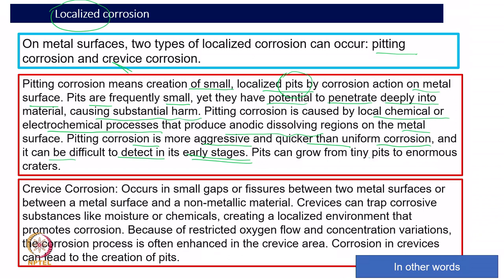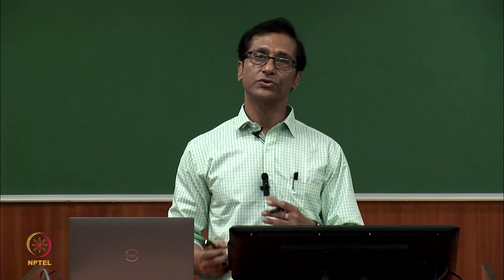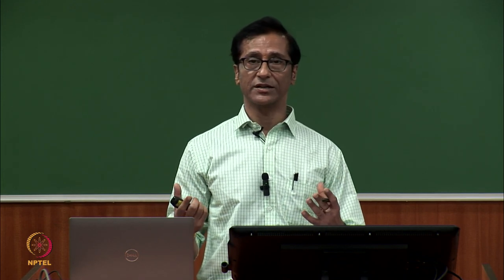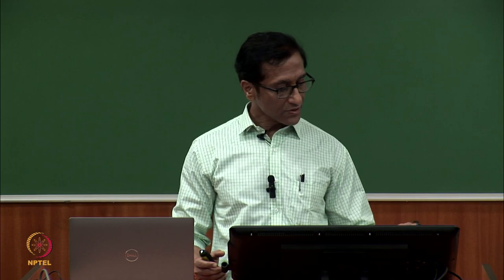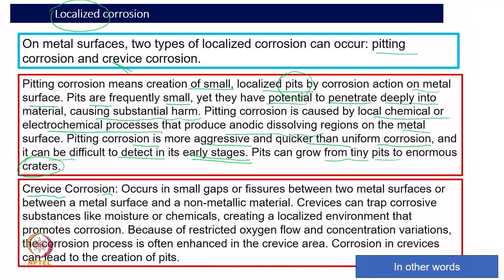A pit can grow from a tiny pit to an enormous crater. Even materials supposed to be corrosion-resistant have shown craters at the end of the process. Crevice corrosion is defined as a small gap, crack, or fissure — perhaps even 10 to 15 microns — that is sufficient to initiate this type of corrosion.